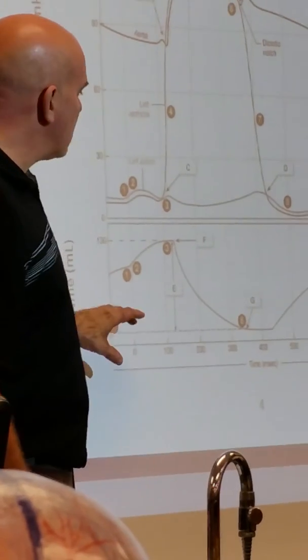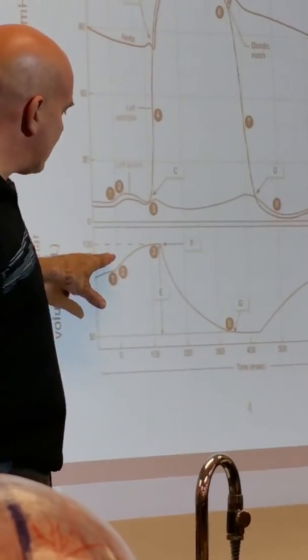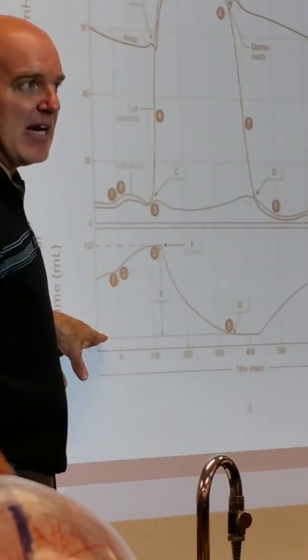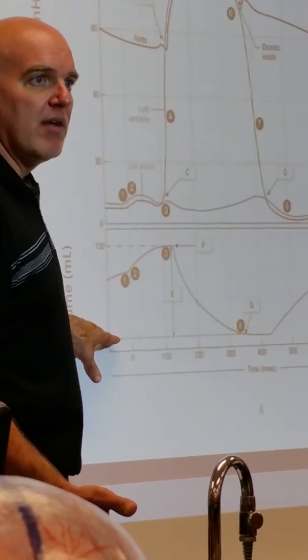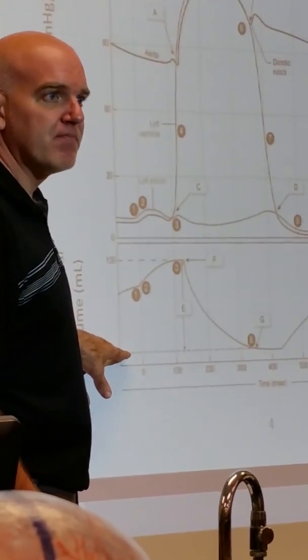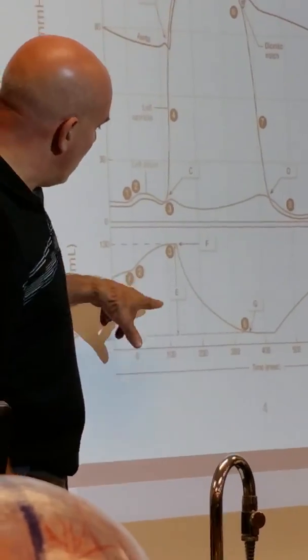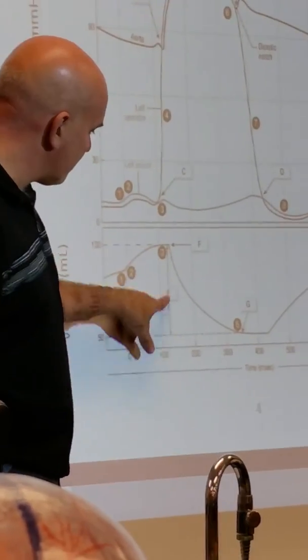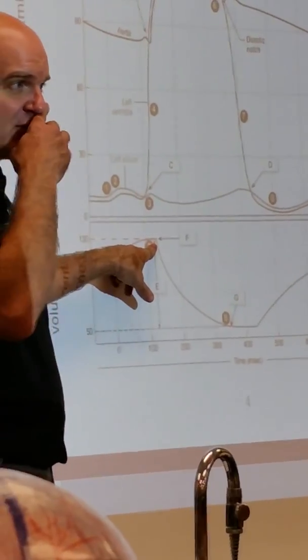So how much did I pump out? End diastolic minus end systolic—that's how much I pumped out, that's my stroke volume. So E is my stroke volume right there.